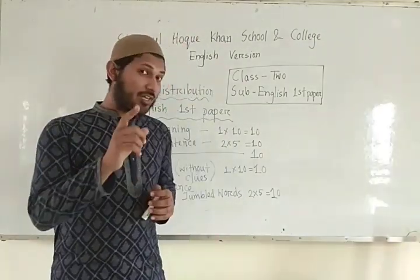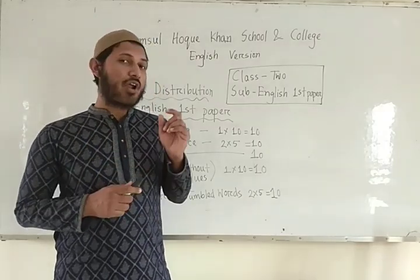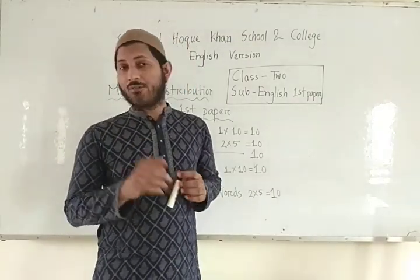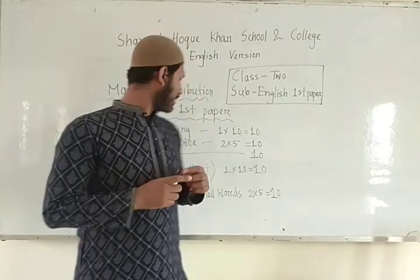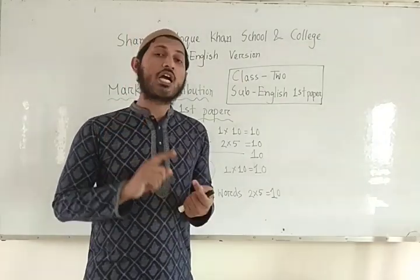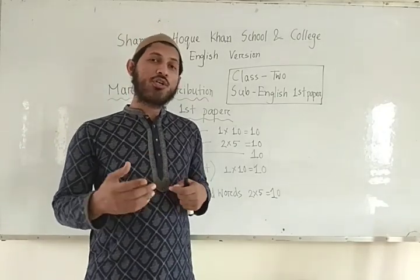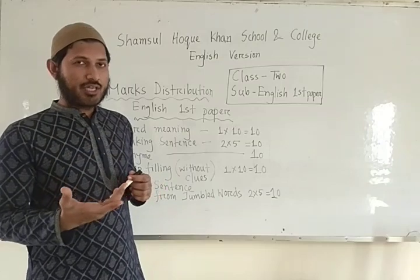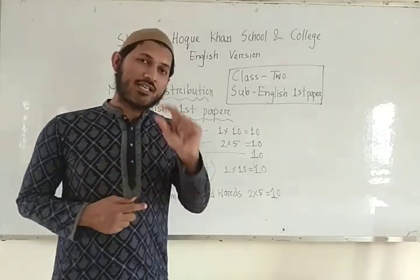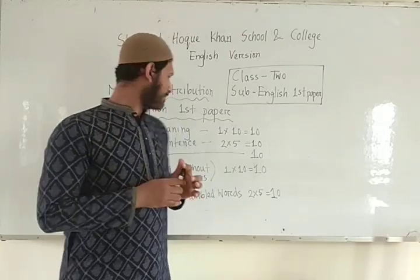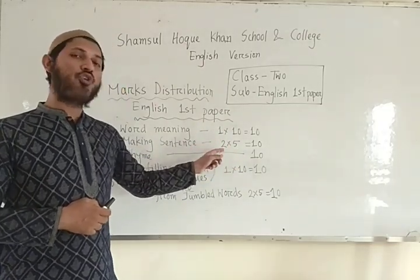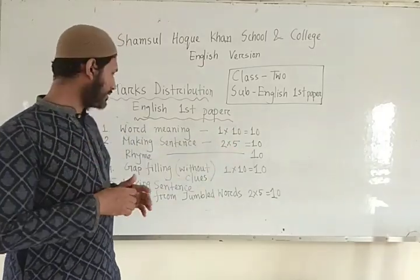So here I make it clear: if you write the meaning of the word which we didn't teach you — that is, you write a different meaning — but the meaning is correct, you must get full marks. The same thing happens in making sentences: if any student writes a sentence which is grammatically correct, you will get full marks even though the sentence is different from what we wrote. Each sentence carries 2 marks, and for 5 sentences in total there are 10 marks.